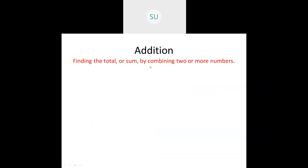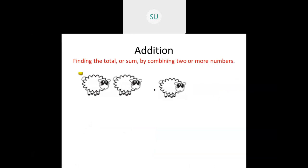We also saw different types of additions. Here we have two sheep in a farm. Another sheep came and joined them. Now how many sheep are there altogether? Two and the one which joined them — one. So two plus one is three. Here 'and' represents addition; 'and' means to add, and we write it as the plus sign.